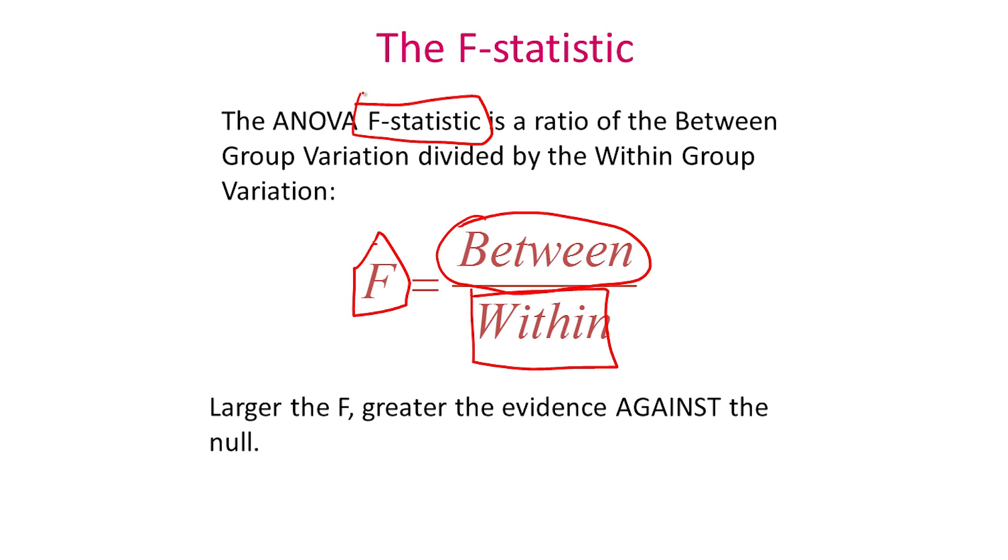Now, again, keep in mind, if you only had two groups, then the F statistic reduces to the T statistic that we talked about earlier. And remember, again, if the T statistic is high, that is, again, evidence against the null.